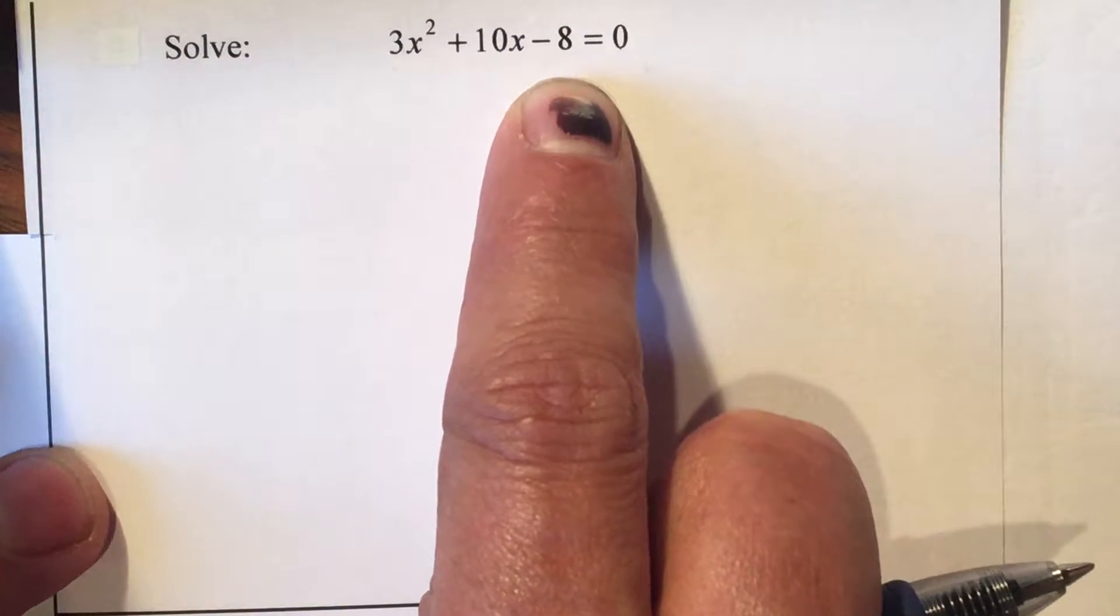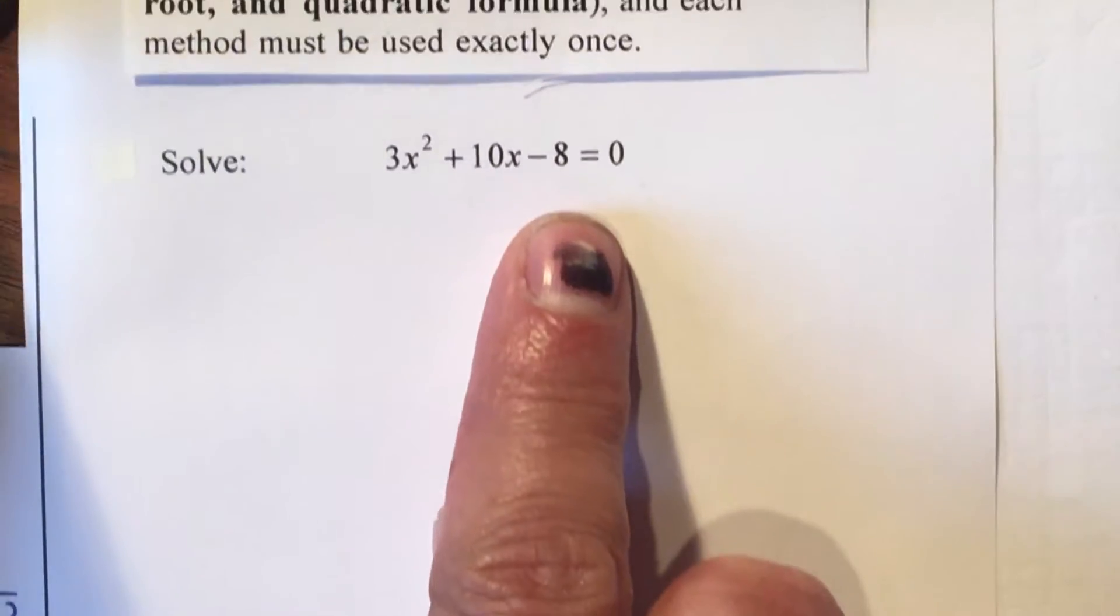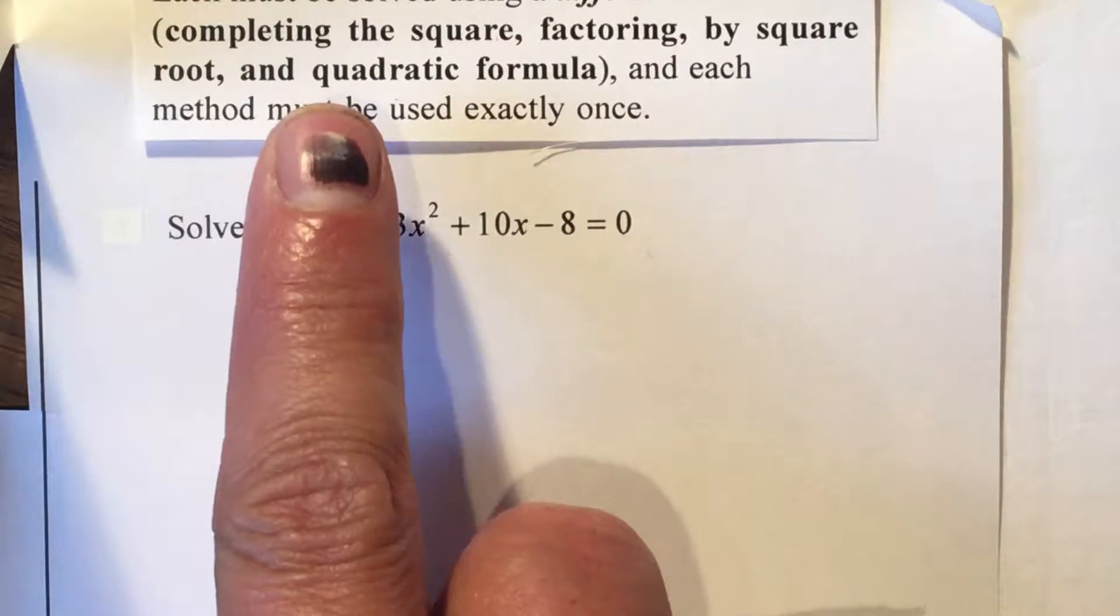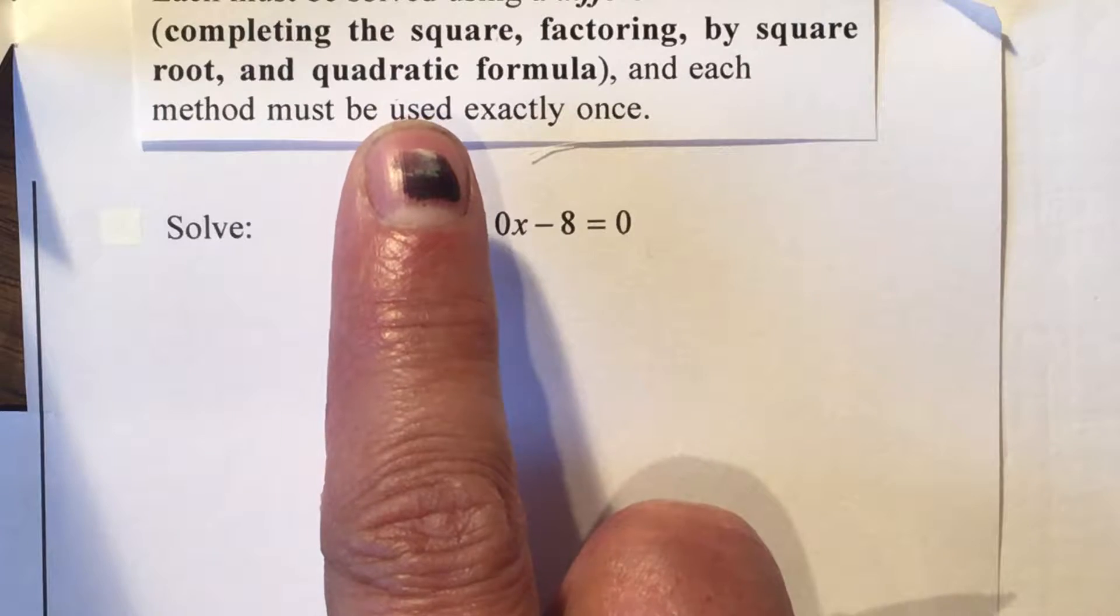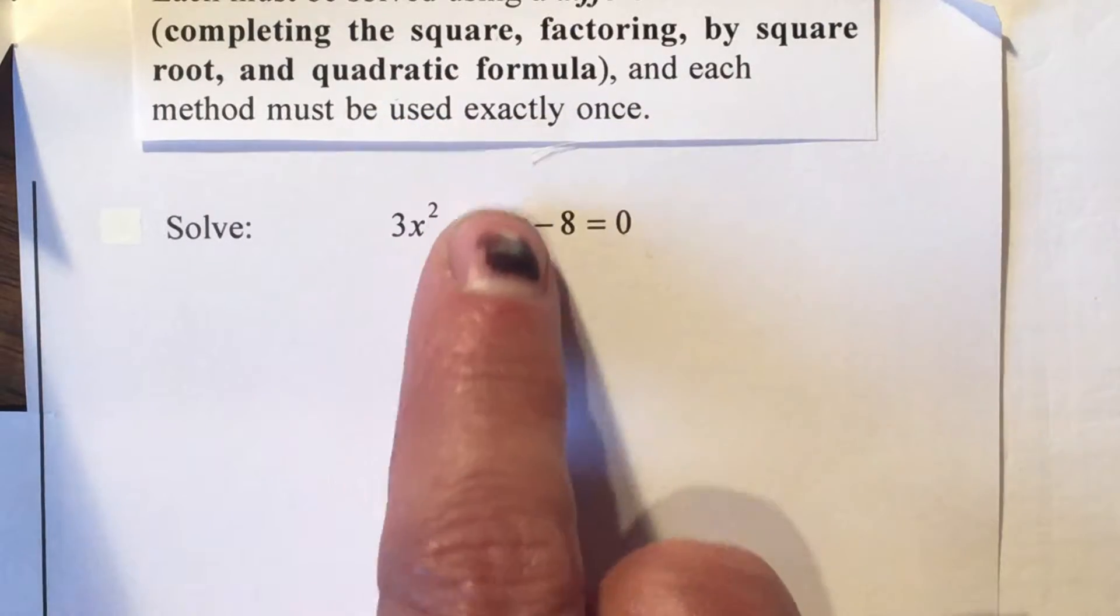They give you a quadratic equation and they're asking you to solve it. They're asking you to use one of the following methods: completing the square, factoring, by square roots, or quadratic formula, and you can only use each method once.